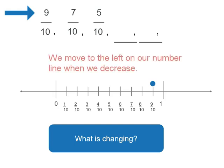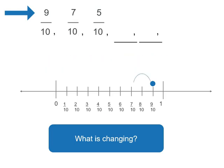So it's decreasing. So we're subtracting something. We're actually subtracting 2 tenths to get to 7 tenths. And then we go to 5 tenths. Now that means we've jumped to the left another 2 tenths. So we're decreasing by 2 tenths.